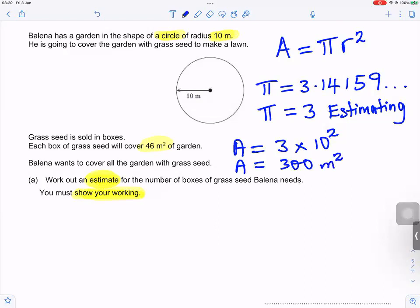Now the question says each box of grass seed will cover 46. We want to estimate 46 to a number that we can. If you have 46 meters squared, you can estimate it to, that sign means approximately, approximately 50. If you put a line after the 4, the 6 is bigger than 5. So you change it to 1 and add it to there. It becomes 5. So 46 meters squared approximately to 50. So now we're going to do 300 divided by 50.